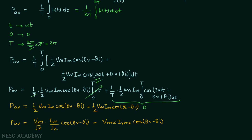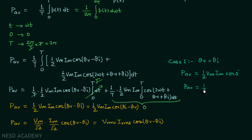Now we will understand two cases. In case 1, θv = θi, meaning both current and voltage are in the same phase. When this happens, the average power will be half VmIm cos(0°) = half VmIm, since cos(0°) = 1. We can also write this as half Im² · R, because this is the case of a resistor — we have seen that for a resistor, current and voltage are in the same phase.